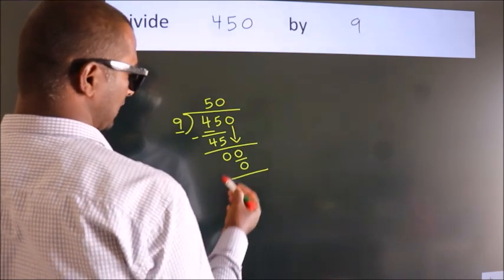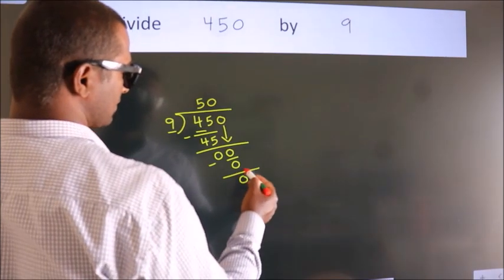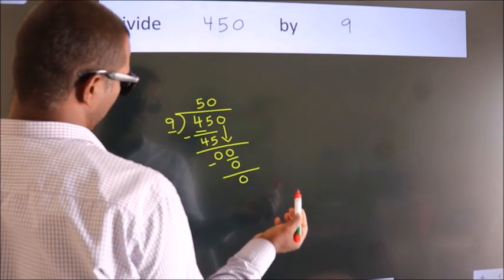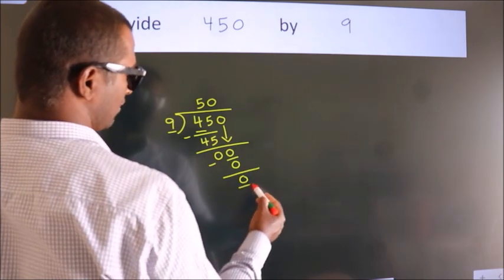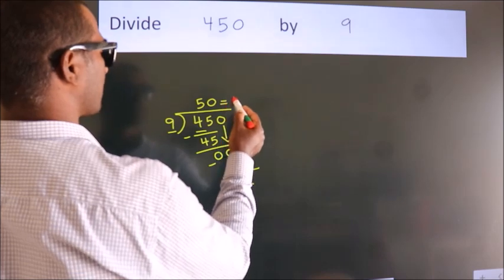Now, we subtract. We get 0. After this, no more numbers to bring down. We got remainder 0. So, this is our quotient.